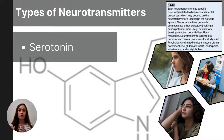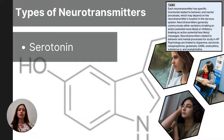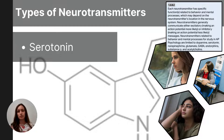Serotonin is a neurotransmitter most notably responsible for the regulation of mood, as well as other functions like hunger, sleep, learning, and memory. I encourage students to remember serotonin's role in mood regulation because low serotonin levels are associated with depression, and some medications that raise serotonin levels are used to treat depression. A lack of serotonin can also lead to appetite changes and sleep disruption.